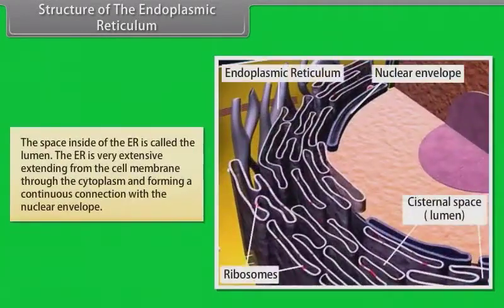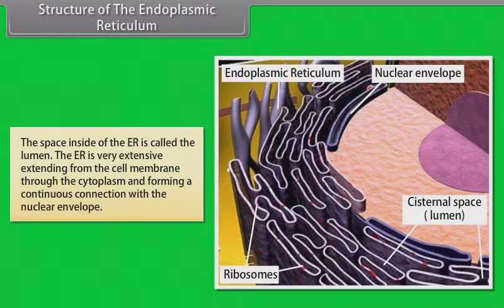The space inside the ER is called the lumen. The ER is very extensive, extending from the cell membrane through the cytoplasm and forming a continuous connection with the nuclear envelope.